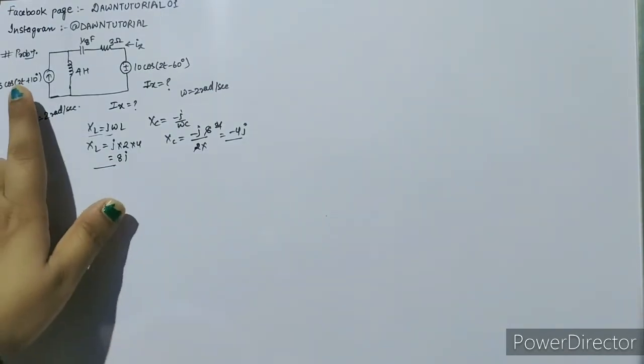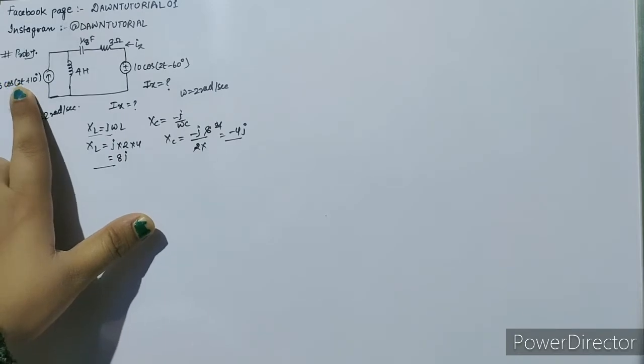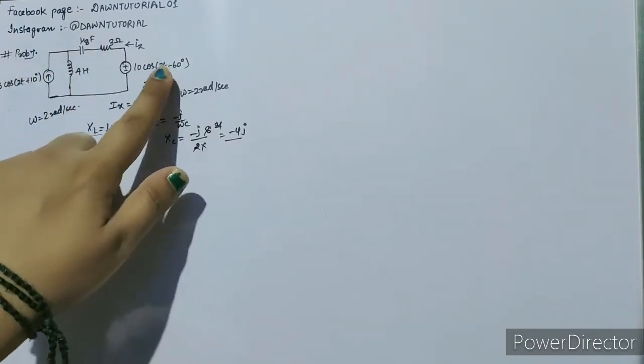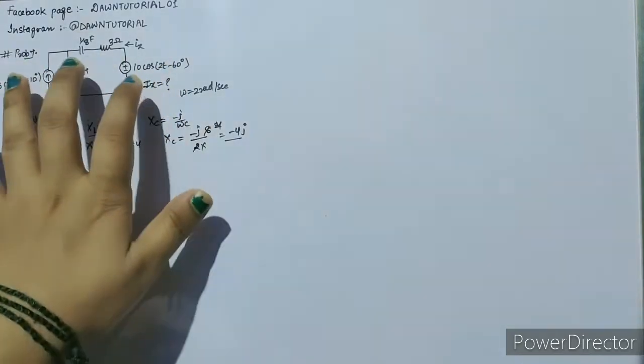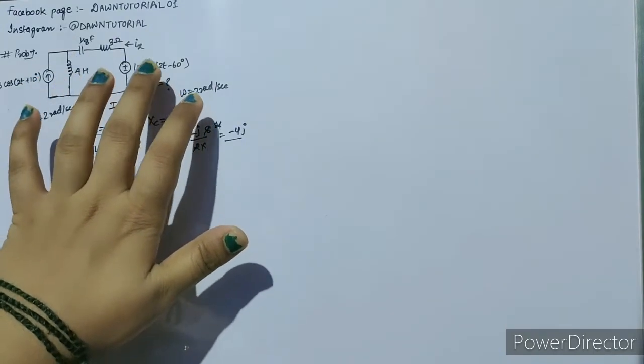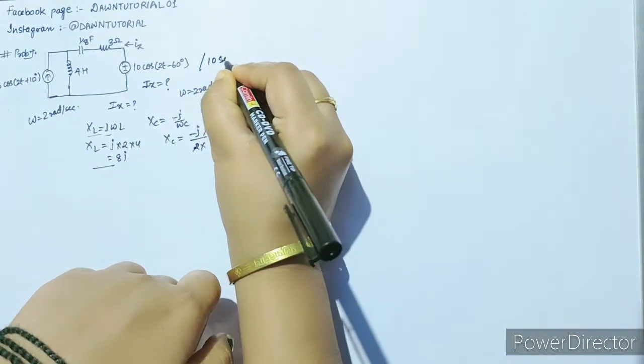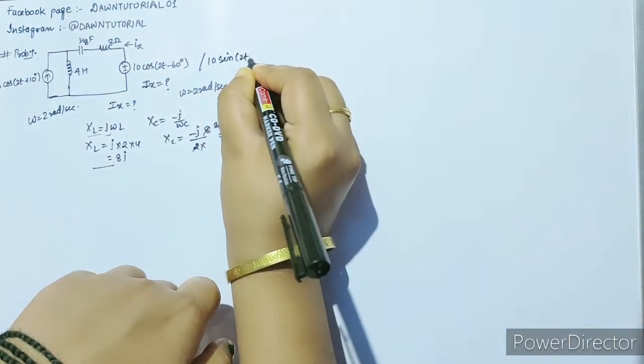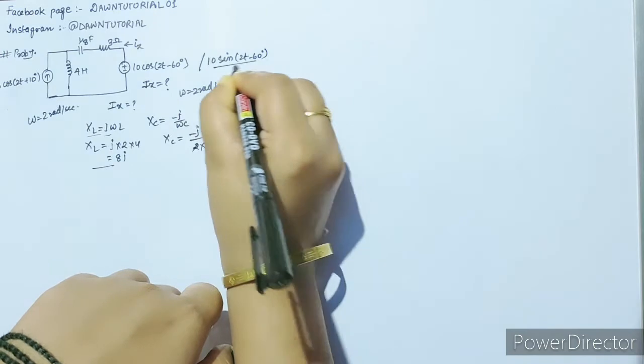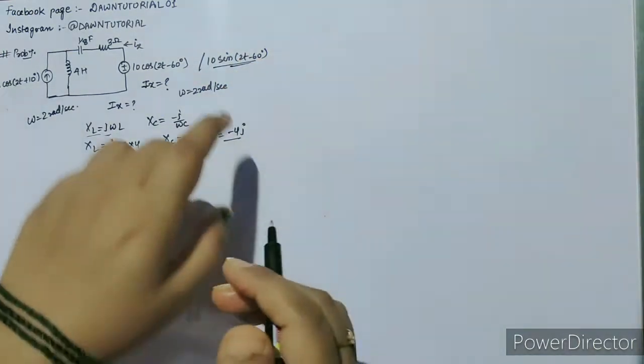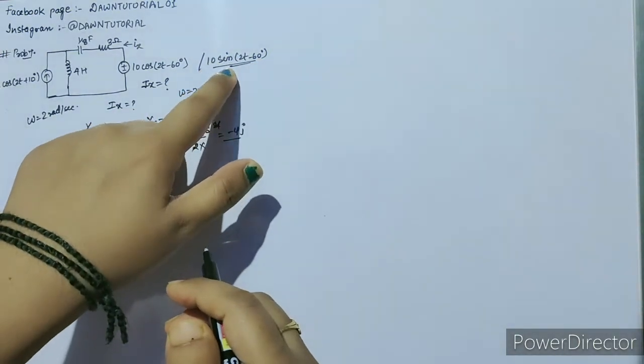Now one more thing. Here both sources are in cos terms. If the voltage source was given as 10 sin(2t-60°), let us suppose, then we would have cos here and sin there, so how would we convert these to phasor domain?